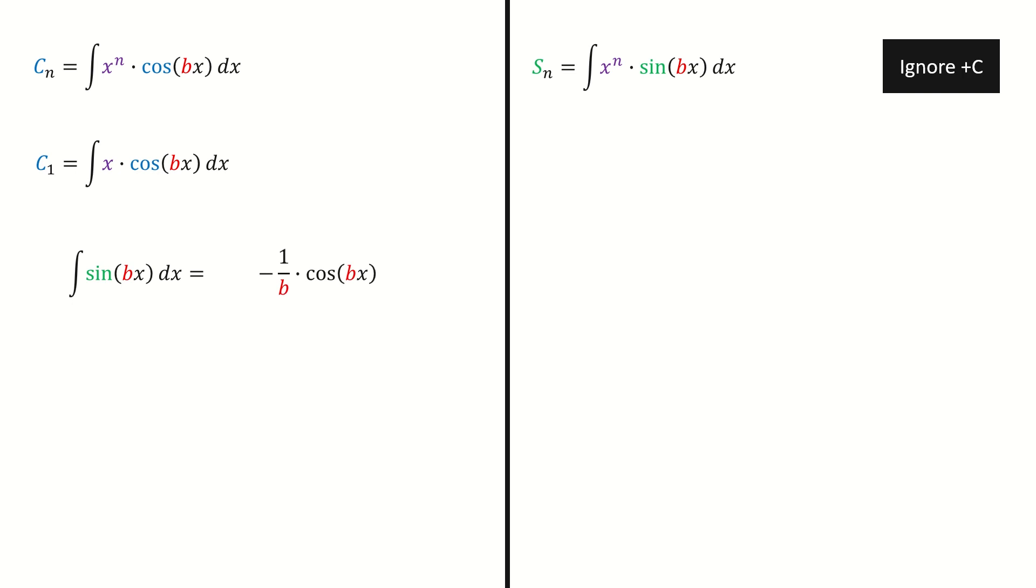We know the result for this basic integral. Now we use Feynman's trick to take the derivative on both sides. Note here, this derivative is with respect to b, so we treat x as a constant. After taking the derivative, the left-hand side goes here. Note for this purple-colored x, it's coming from the chain rule.